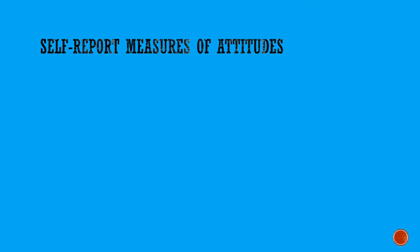Welcome to this presentation about the measurement of attitudes. In almost all studies where attitudes are measured, researchers are using something called a self-report measure of attitudes, meaning that in some way or other the individual is being asked to verbally report what their attitudes are. This report might be in an interview, or maybe a person at a shopping mall is stopped by a researcher who asks them a series of questions, or maybe the person is filling out a questionnaire either online or on paper, but in some way or other the person is consciously reporting what their attitudes are.